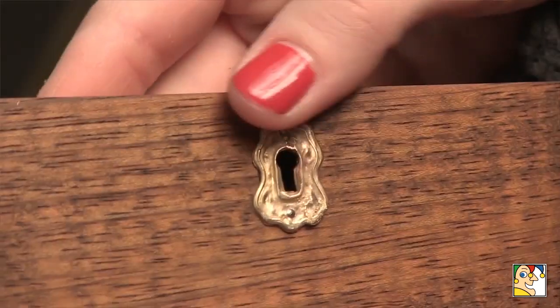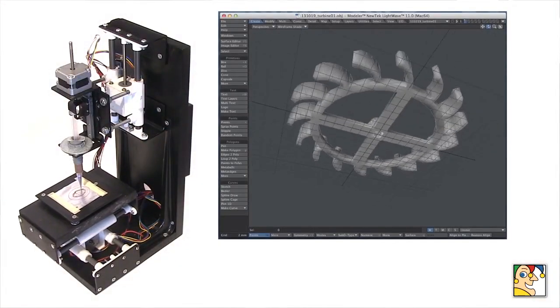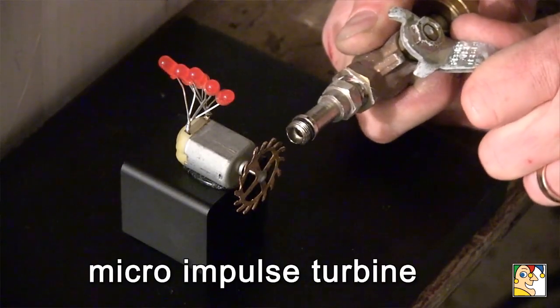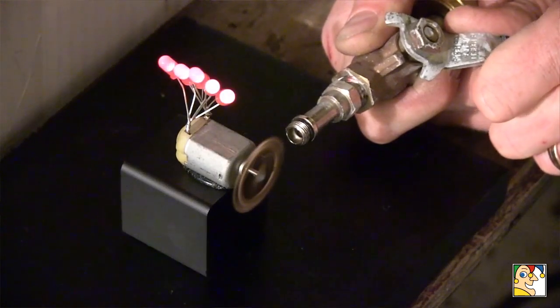As an example, I printed a really small impulse turbine, attached it to a tiny generator, and blew air at it - I was able to light up some LEDs. I made a turbine engine at home with this. The possibilities are limited only by your imagination.